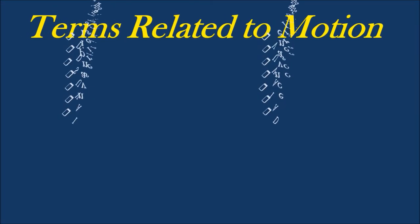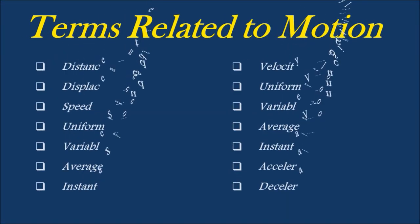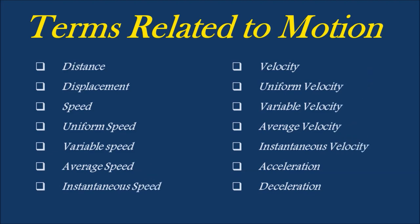The various terms related to motion are: distance, displacement, speed, uniform speed, variable speed, average speed, instantaneous speed, velocity, uniform velocity, variable velocity, average velocity, instantaneous velocity, acceleration, and deceleration. Let's now understand each and every term in detail.